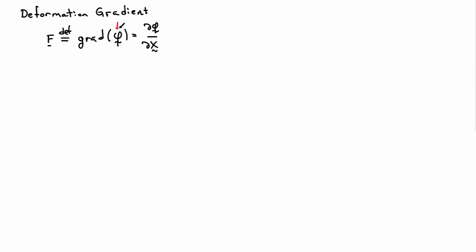We'll use the symbol phi for the deformation map. If we take its gradient, that's defined to be F. Written in other ways, it's the partial derivative of phi with respect to capital X, the coordinates of the reference positions of the material points.